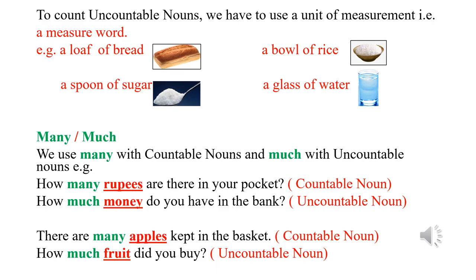To make it more clear, we use 'many' with countable nouns and 'much' with uncountable nouns. For example: how many rupees are there in your pocket? — rupees is a countable noun and we have used 'many.' How much money do you have in the bank? — money is an uncountable noun and we have used 'much.' There are many apples kept in the basket — apples are countable nouns. How much fruit did you buy? — fruit is an uncountable noun and we used 'much.'